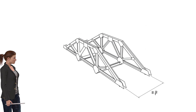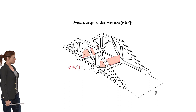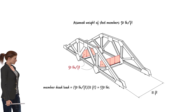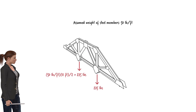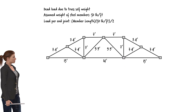Let us assume the steel members used in the bridge do not weigh more than 50 pounds per foot — that is, a dead load of 50 pounds per foot for the steel members. Therefore, the weight of each cross beam can be viewed as a uniformly distributed load of 50 pounds per foot. Since each cross beam has a length of 11 feet, the dead load of the member equals 550 pounds, transferred equally to the two end joints, giving 275 pounds per interior joint. Given the geometry of the truss, we can calculate the dead load due to each member and place it at the member's end joints.